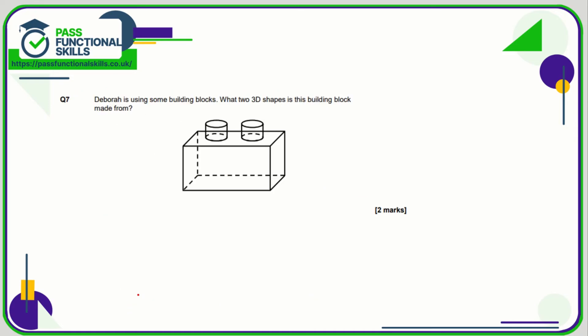Question number seven. Debra is using some building blocks. What two 3D shapes is the building block made from? Well here we've got a cuboid and here we've got an example of a cylinder.